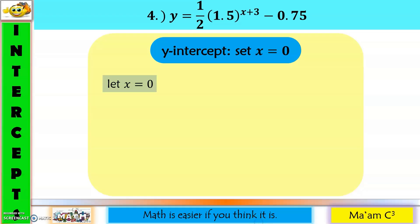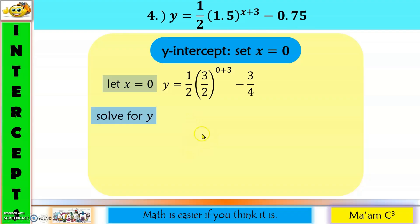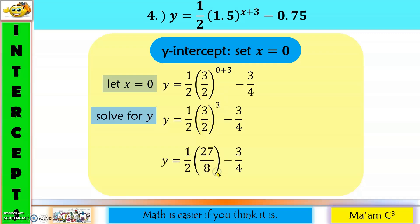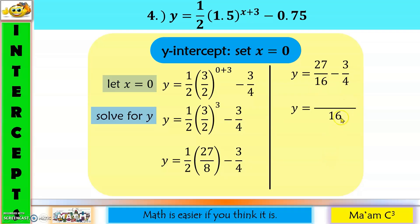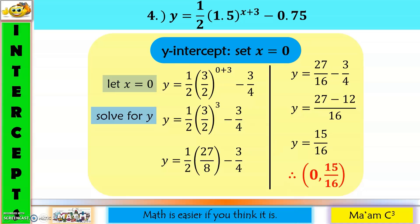For the y-intercept: let x equal zero, using the fraction equivalents. Zero plus three is three. Distributing the cube: three cubed over two cubed is 27 over eight. One times 27 is 27 and two times eight is 16. Using LCD of 16: 27 over 16 minus three-fourths gives 27 minus 12 over 16, which is 15 over 16. My x is zero and my y is 15 over 16. Therefore, the y-intercept is (0, 15/16).